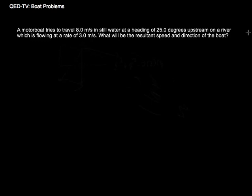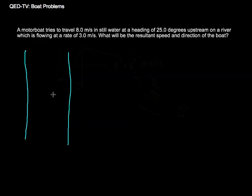We're going to try to do a boat problem. When we have a boat problem, we'll have a river. The way that we designate vectors in boat problems is from straight across. So if we draw a straight across line, we can either be upstream from that — all the way directly upstream, which would be 90 degrees from the straight across — or we can go downstream, up to 90 degrees downstream. That's the only way we describe vectors in river problems.